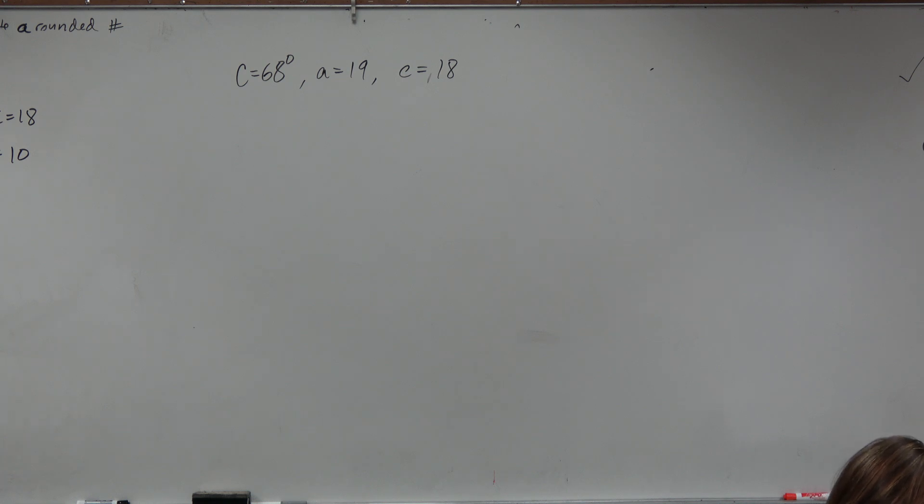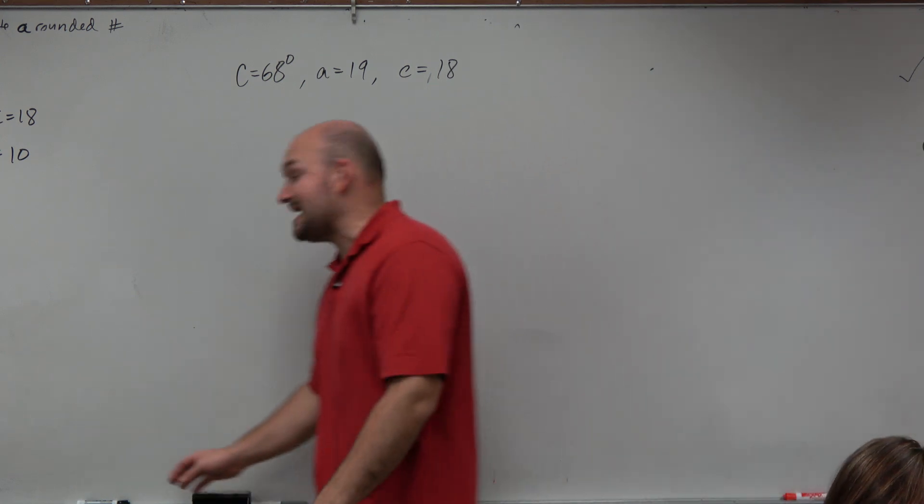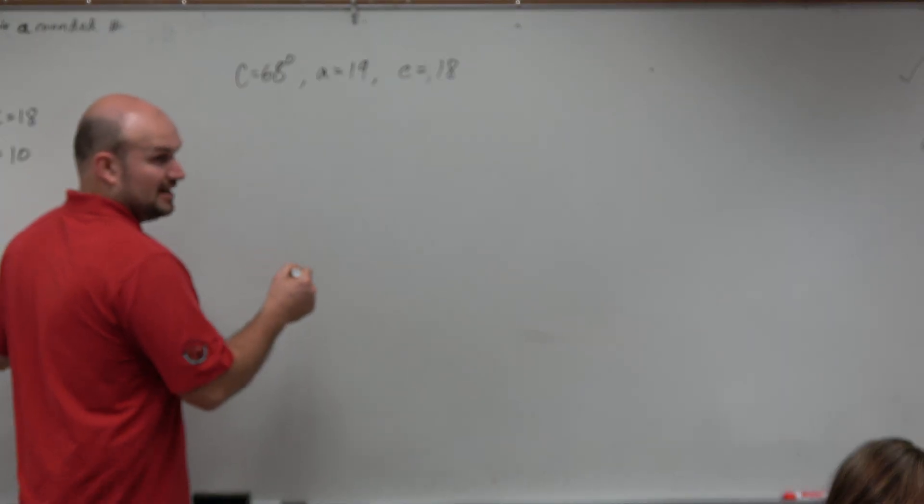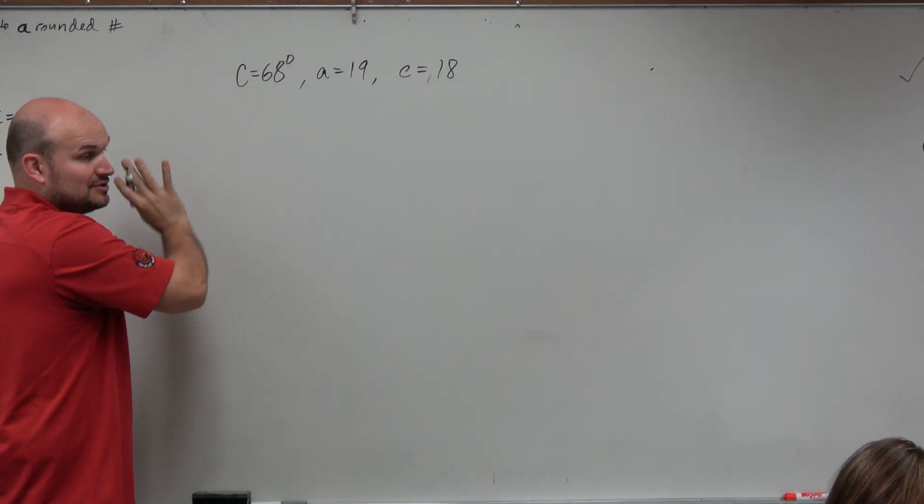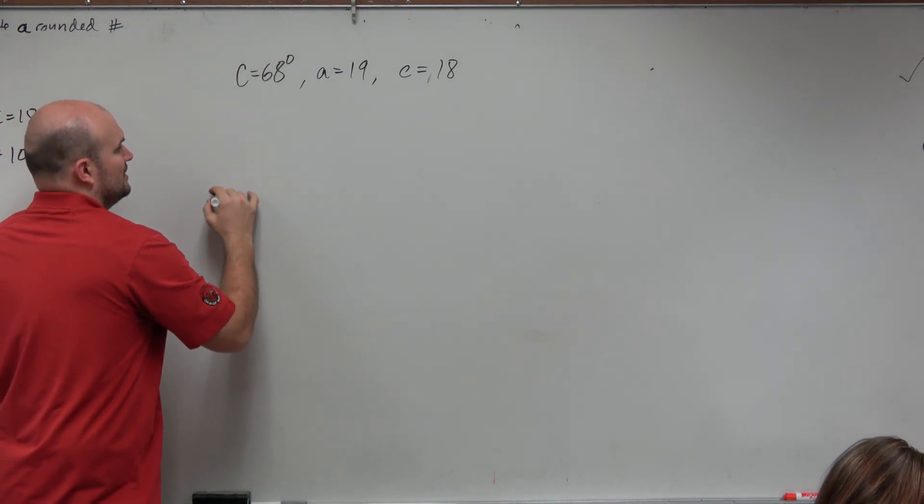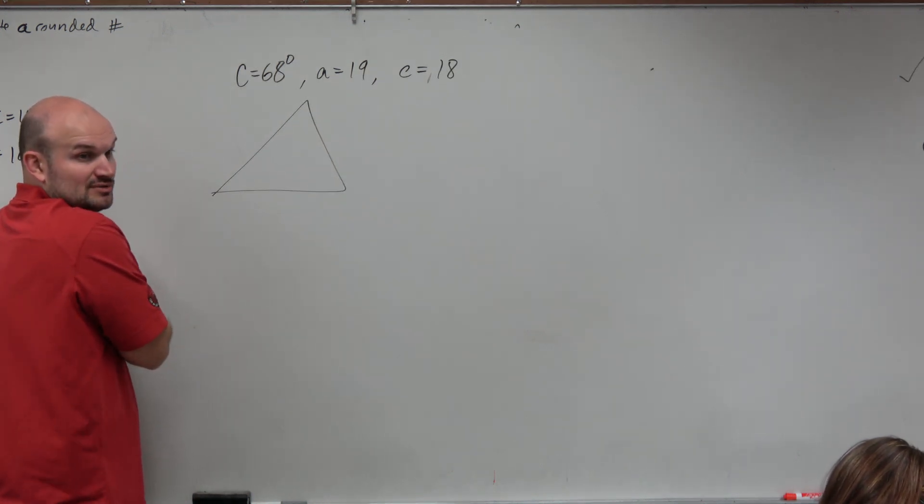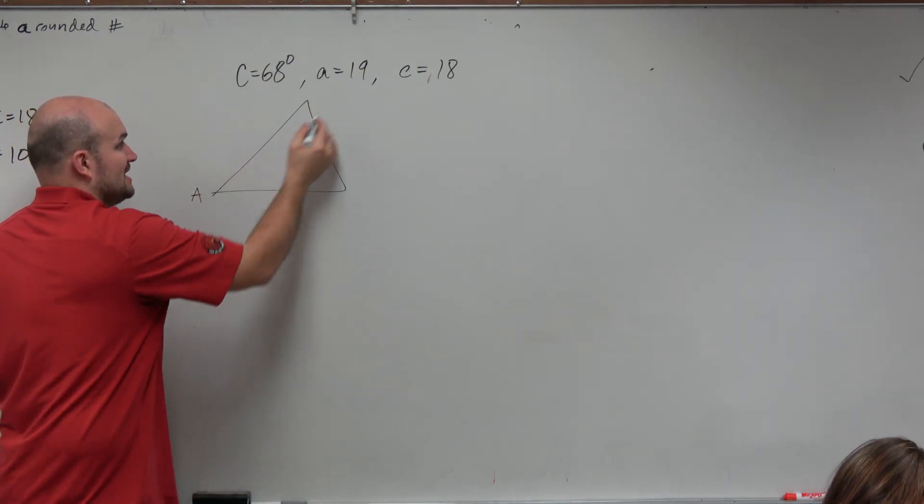What we notice here is whenever you're given information, before you even try doing anything, let's go ahead and sketch a picture. We can all do this no matter what we're doing because you're going to be given information. Let's just sketch a triangle. We can assume that this is an acute oblique triangle, meaning all acute angles.